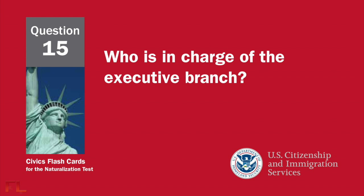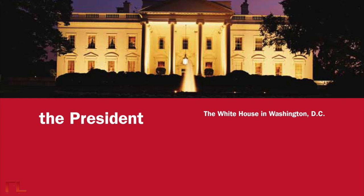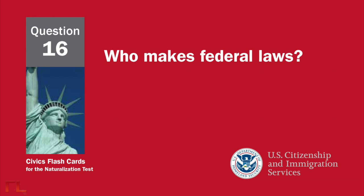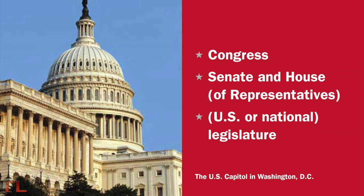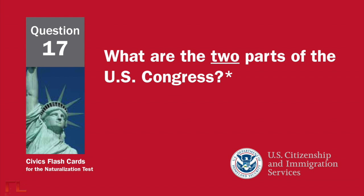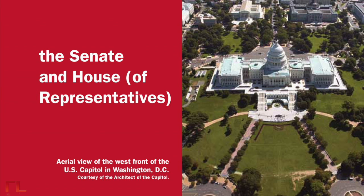Who is in charge of the executive branch? The president. Who makes federal laws? Congress — the Senate and House of Representatives, or U.S. or National Legislature. What are the two parts of the U.S. Congress? The Senate and House of Representatives.